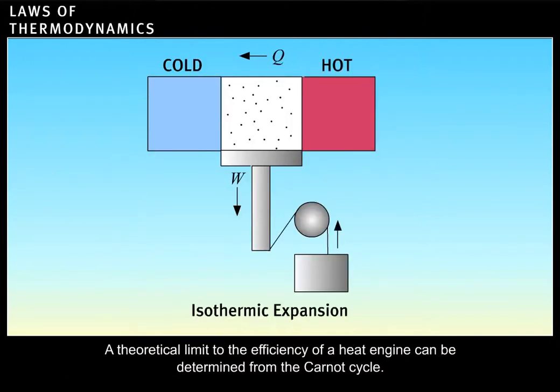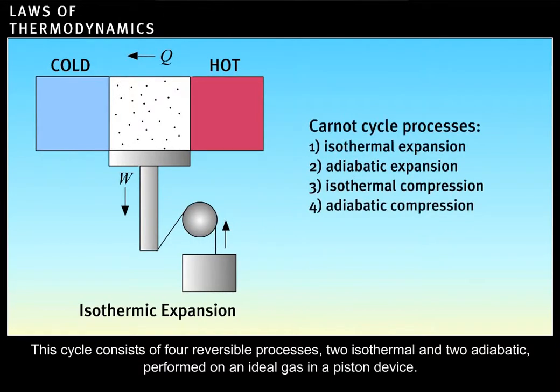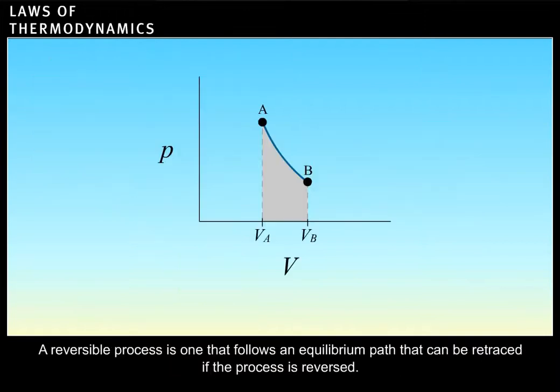A theoretical limit to the efficiency of a heat engine can be determined from the Carnot cycle. This cycle consists of four reversible processes, two isothermal and two adiabatic, performed on an ideal gas in a piston device. A reversible process is one that follows an equilibrium path that can be retraced if the process is reversed.